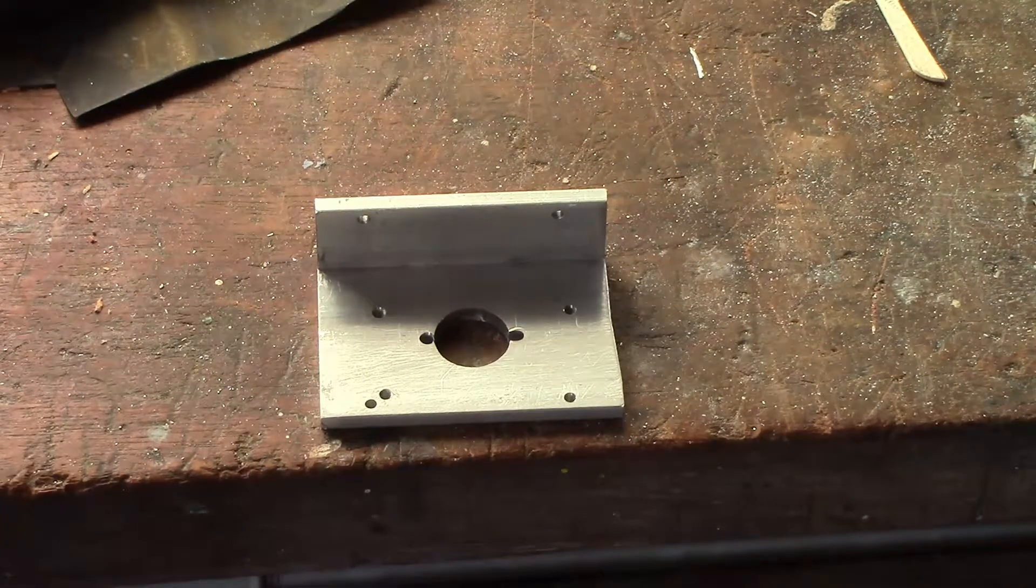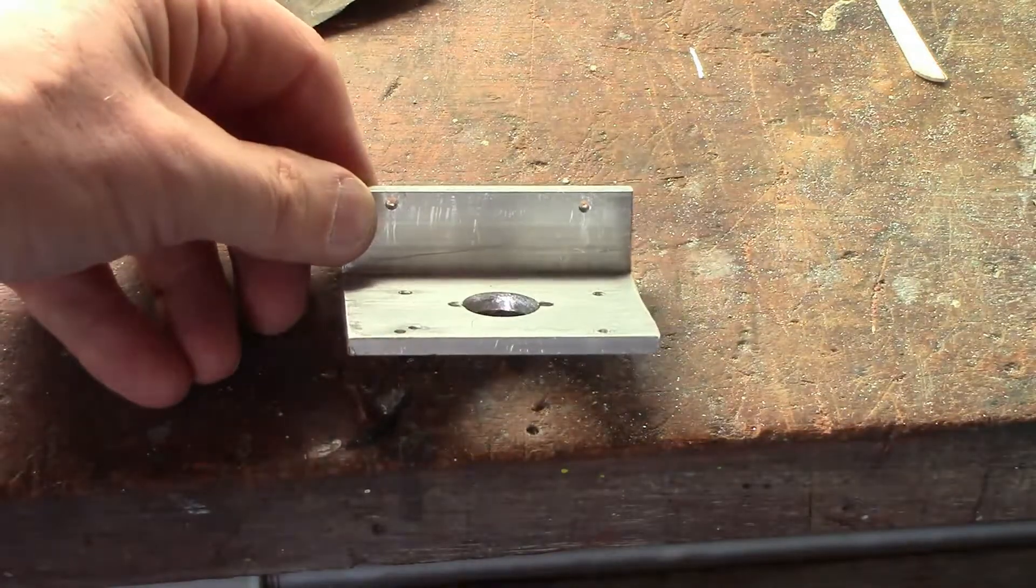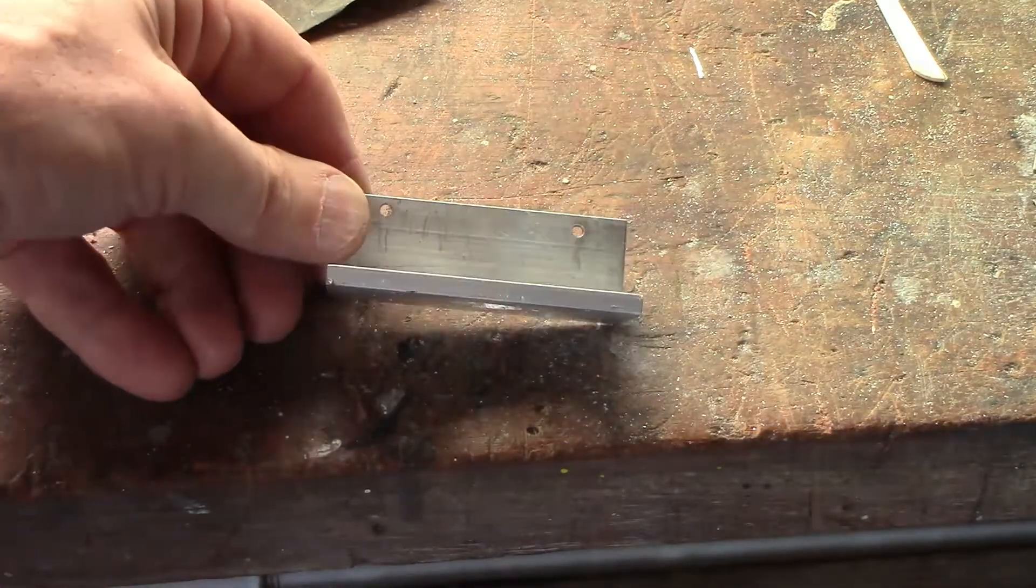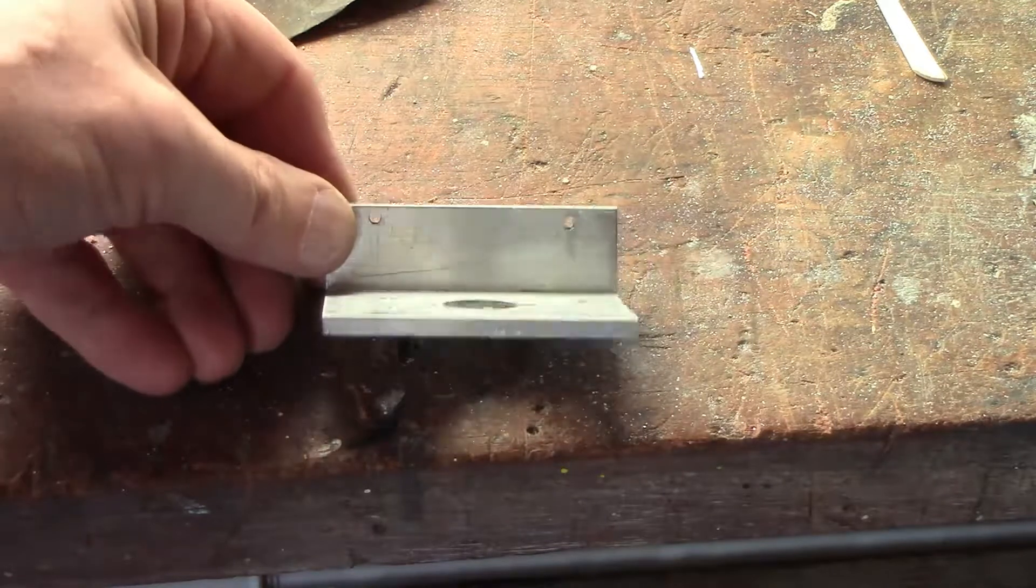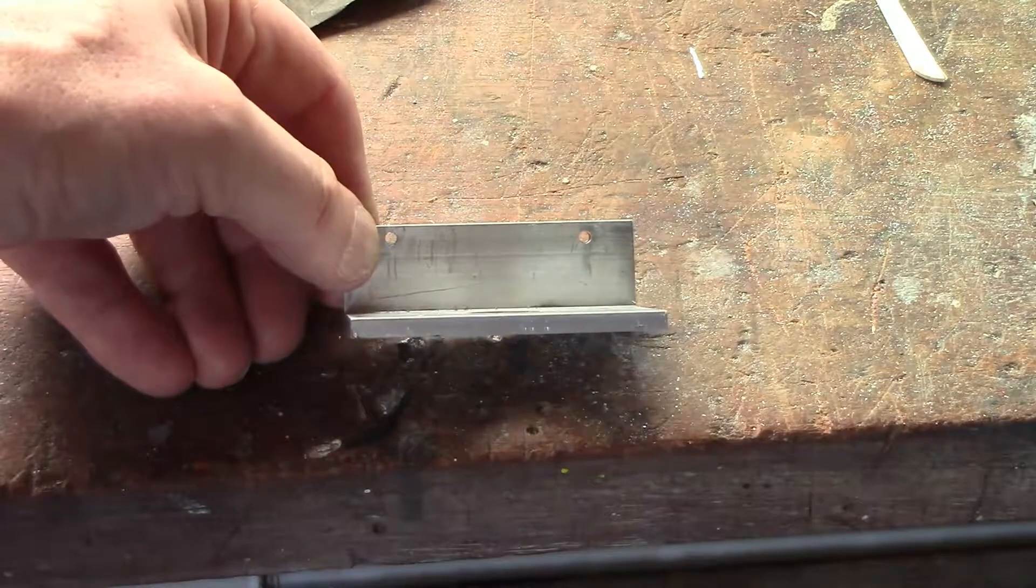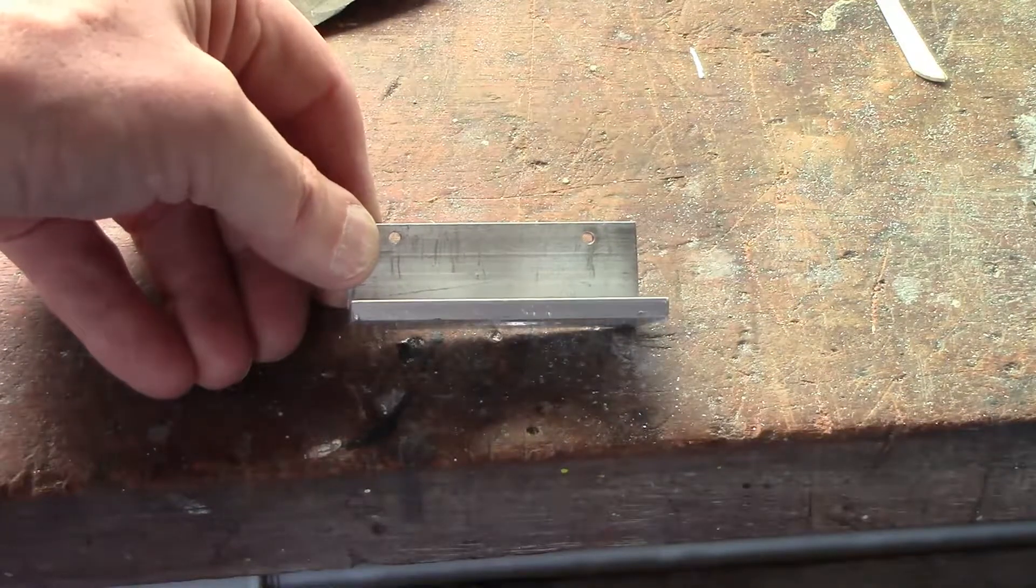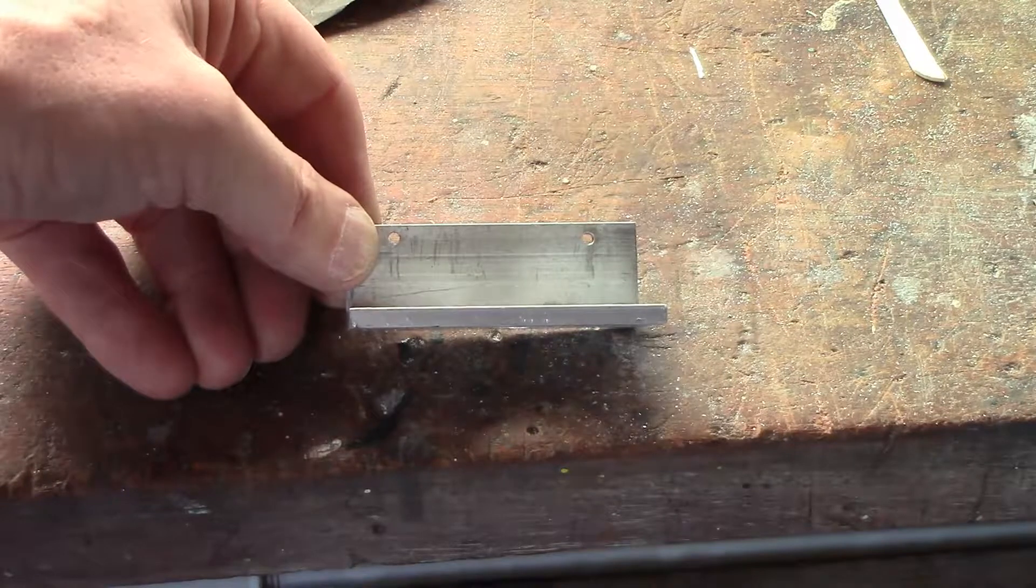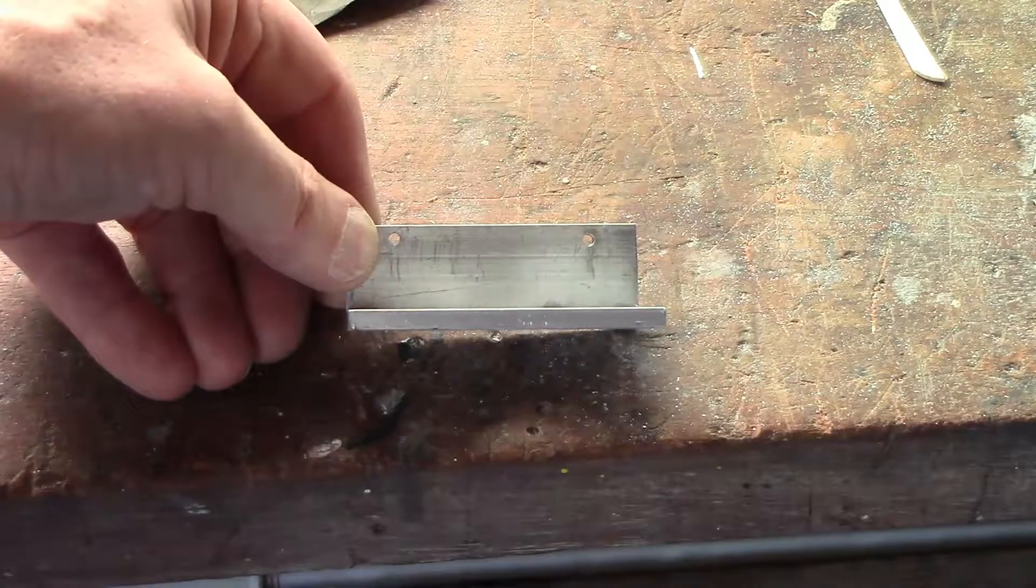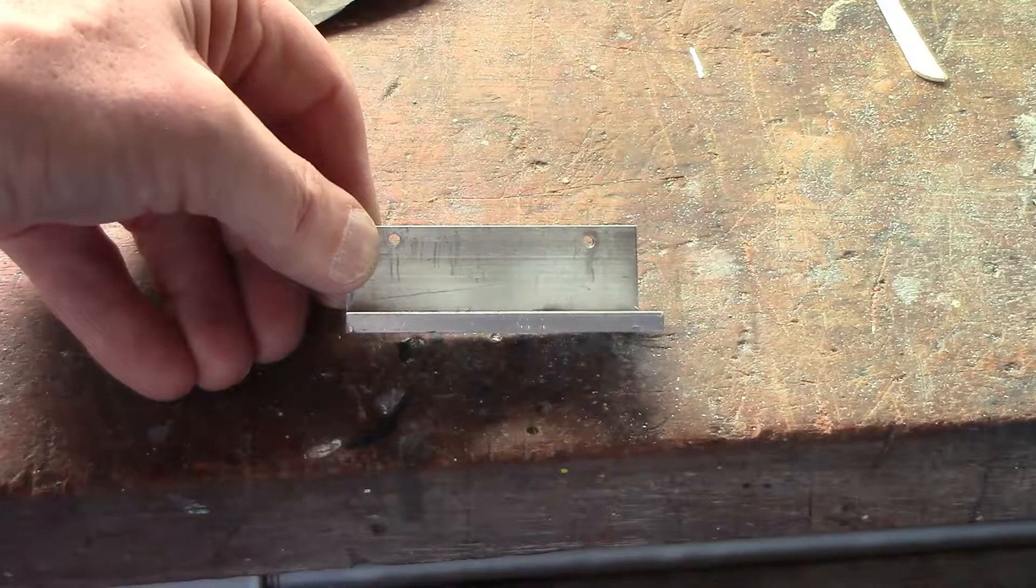I've got all the holes in the right position, but this hole somehow when I tapped it I stripped the thread. So what I've got to do now is drill this out to four millimeters, braise it full, and re-drill it to three millimeters, tap it to M3, and hold my breath, cross my fingers, and hope for the best.